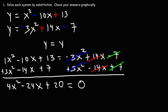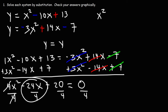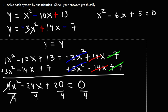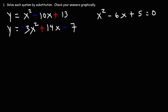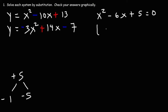Notice that each coefficient is a multiple of 4, so we divide every term by 4, giving x squared minus 6x plus 5. To factor this trinomial, we need two numbers that multiply to positive 5 but add to negative 6. Negative 1 and negative 5 multiply to positive 5 and add to negative 6, so the factored form is (x minus 1)(x minus 5).